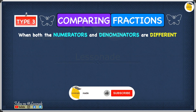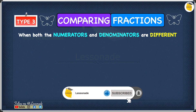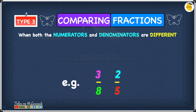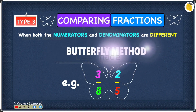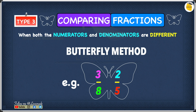Type three is comparing fractions when both the numerator and the denominators are different. The example is three over eight and two over five. Since the numerators and denominators are both different, you can't use type one or type two. The method to use is called the butterfly method. For the butterfly method, you multiply the denominator of one fraction by the numerator of the other fraction. So five times three gives fifteen.